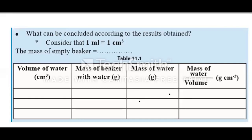In this activity we measure the volume of water in millilitres. You need to understand the relationship between millilitres and cubic centimeters, because we will be recording our readings in cubic centimeters. One millilitre equals one cubic centimeter. Therefore the readings of volumes of water obtained in millilitres must be recorded in cubic centimeters.